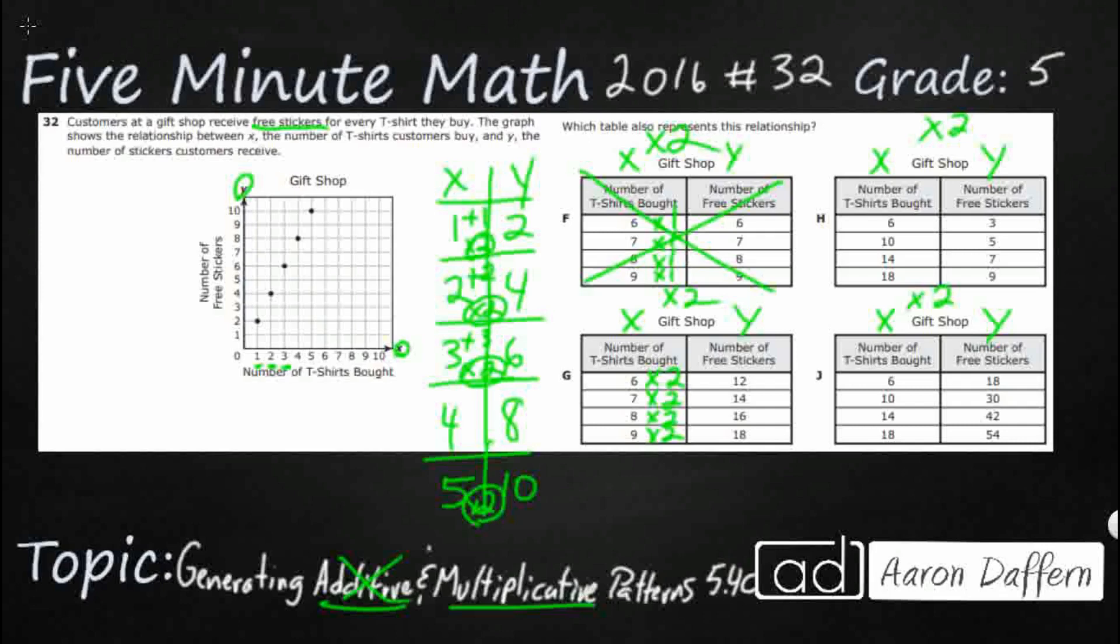But before we get excited, we have two more tables that we need to eliminate. Take a look at what we're doing here. This is neither an additive or multiplicative. It's a divisive relationship, I guess. We're dividing by 2. We're cutting it in half. Take a look at this. We're going from 14 down to 7, 18 down to 9. You're dividing by 2. So, it's the correct number, and it's the inverse operation, not what we need.